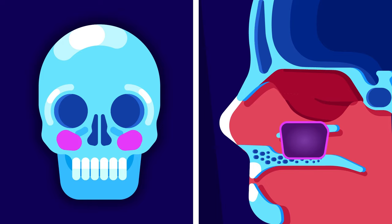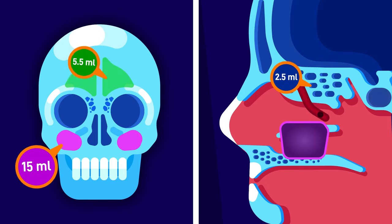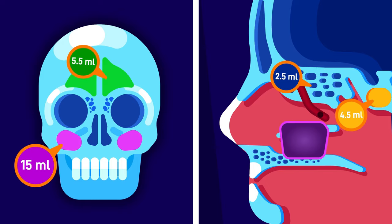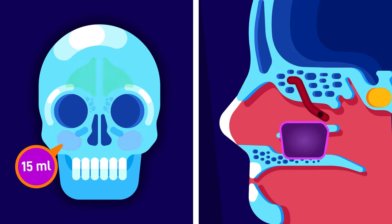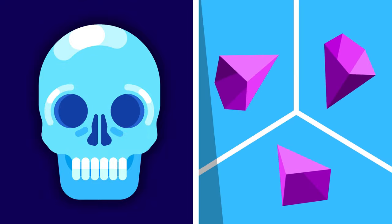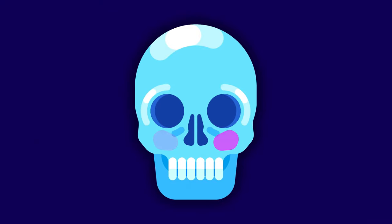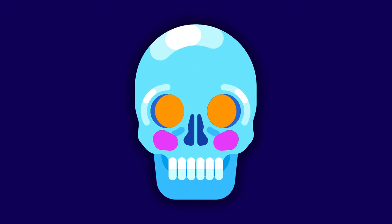Maxillary sinuses. The maxillary sinuses are the largest of the sinuses — pyramidal in shape and symmetric. They are located under the eyes, laterally and slightly inferiorly to the nasal cavities.